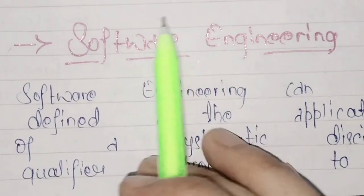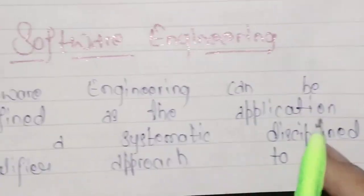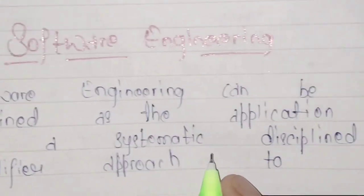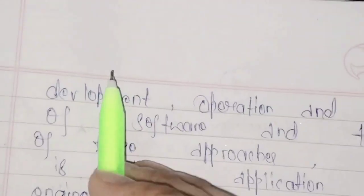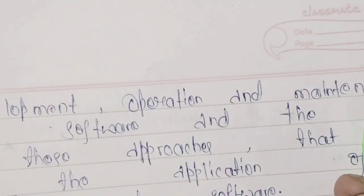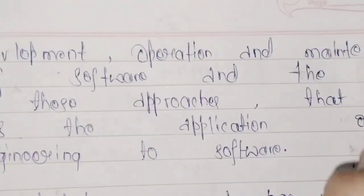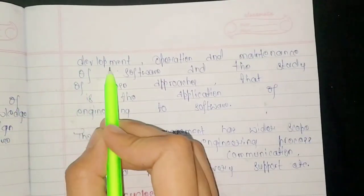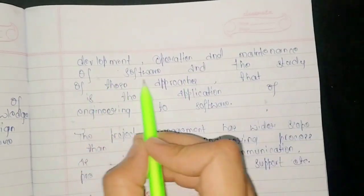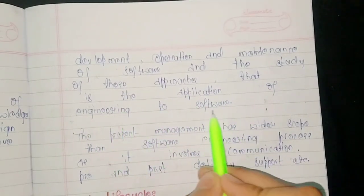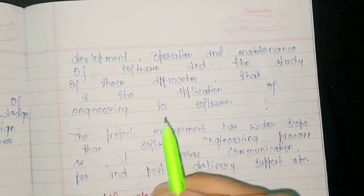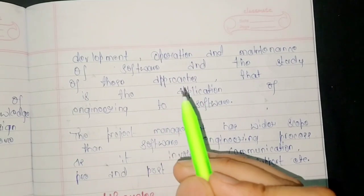Software engineering can be defined as the application of a systematic disciplined quantifiable approach to development, operation and maintenance of software and the study of these approaches. That is the application of engineering to software engineering.